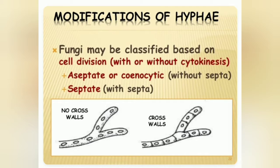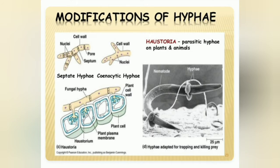Modifications of hyphae: fungi may be classified based on cell division with or without cytokinesis. Aseptate means without septa; septate means with septa. Septa is a cross wall structure of hyphae. There is also a structure called haustoria, which are parasitic hyphae found on plants and animals.